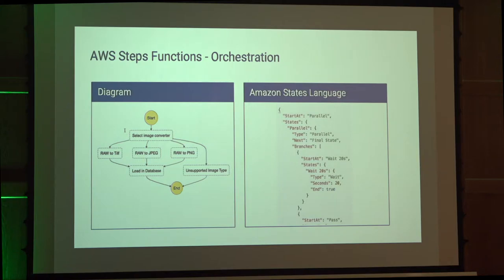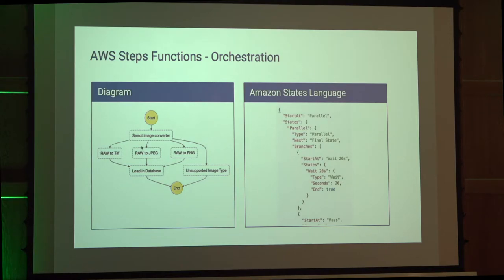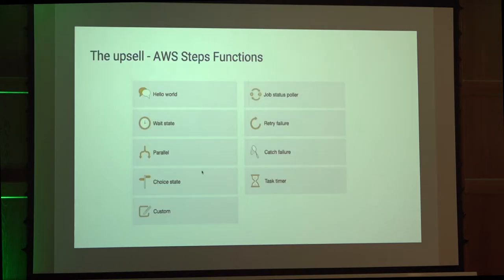There's a different product called AWS Step Functions. The idea is you get orchestration of Lambdas. For example, a user uploads an image file and you want to convert it to three different formats — TIFF, JPEG, and PNG — doing this in parallel, then joining the results to load everything into a database, or saying you don't support that image. This is specified as JSON via the Amazon States Language. Amazon provides blueprints like polling for job completion, waiting, retrying, running stuff in parallel, catching failures, timing, and so on.